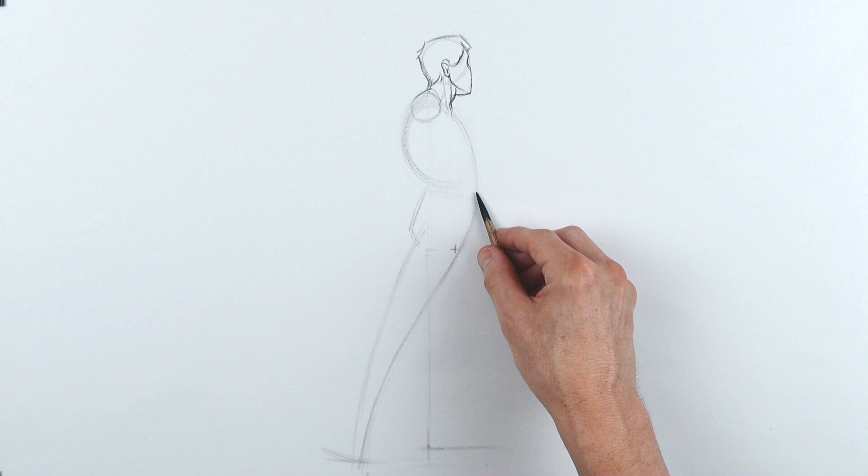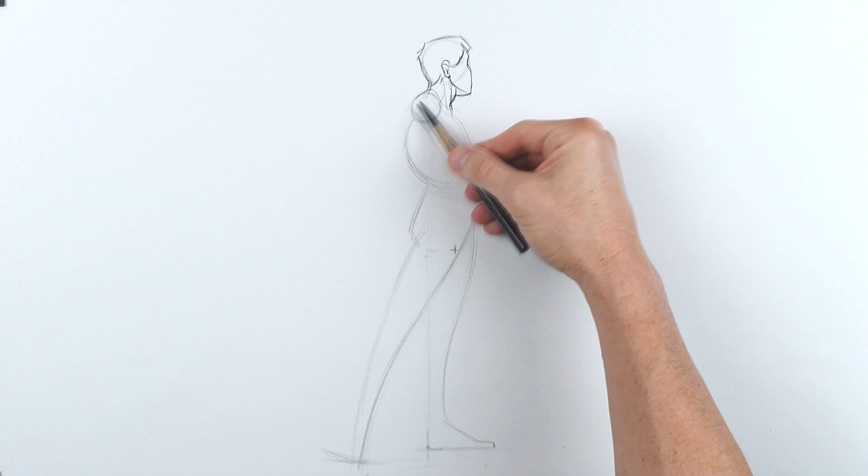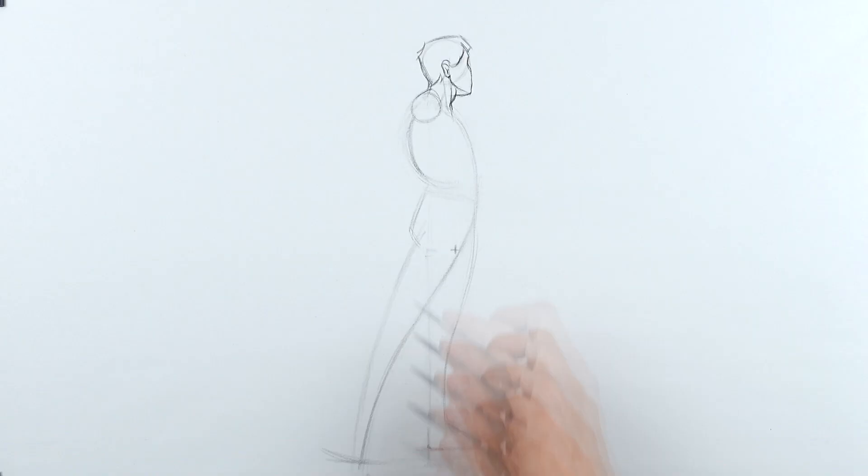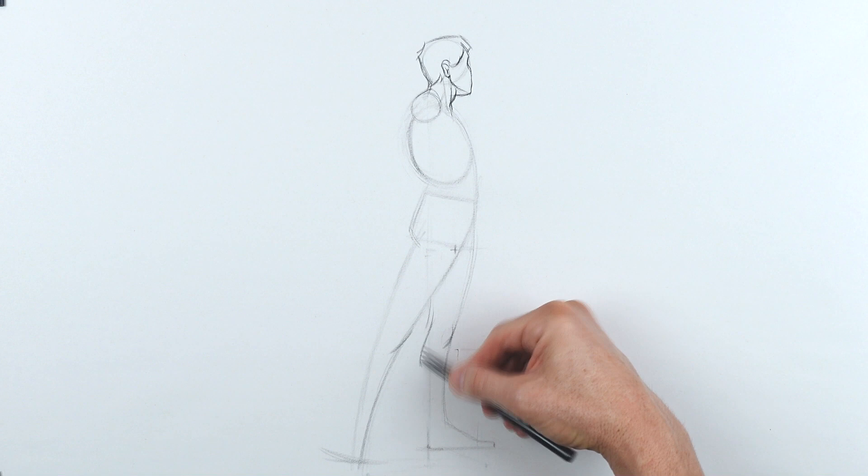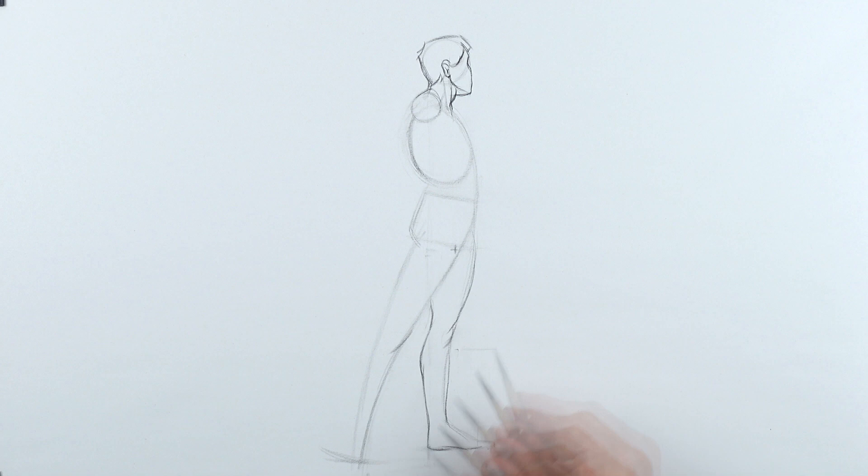Next I'm going to map out that weight-bearing leg, the overall rhythm with that really big sweeping S-curve. Then I'm going to look for the halfway point between the crotch and the bottom of the foot to help me locate the kneecap. I like to sit the kneecap right on top of that line or just touching it. Here I got a little ahead of myself and started doing the contours and anatomical indications with the overlapping lines, but then I decided to go back up into the arm.